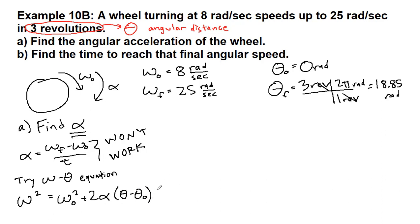So omega final squared equals omega initial squared plus 2 alpha theta minus theta initial. All right, so let's plug in some numbers here. I'm going to bring this up to the top so we don't run out of space. So we have 25 squared equals 8 squared plus 2 times our unknown alpha times 18.85.